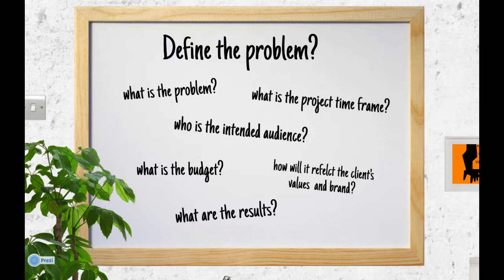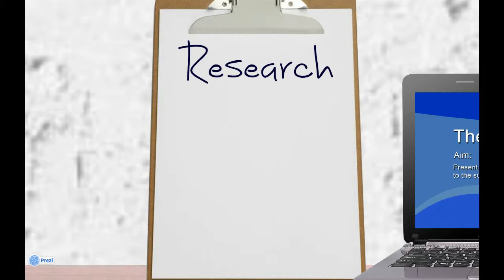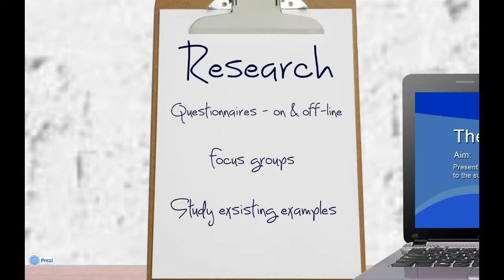The next step is to research. Research is quite a long step — the more you research, the better the project will be. You should be looking at primary and secondary research: things like questionnaires online and offline, and focus groups. I went out to the festival and spoke to audience members testing the foods, asking what they thought was good or bad about the website. I spoke to food producers about how they interacted with it. I also studied existing festival websites, and looked at things like the National Trust to capture an atmosphere of nature. I even looked at organic food packaging to represent the idea of local produce.